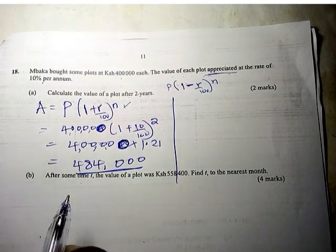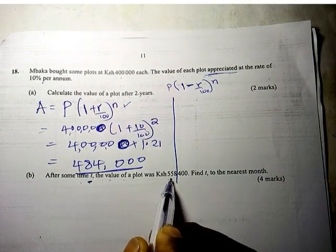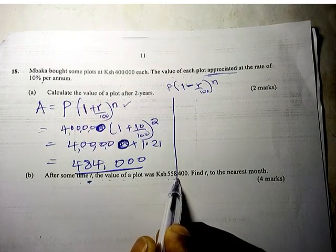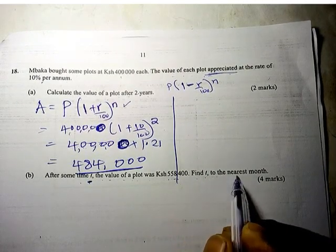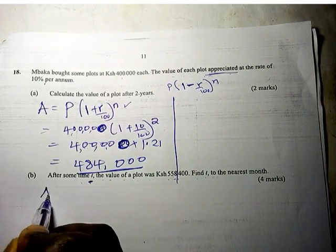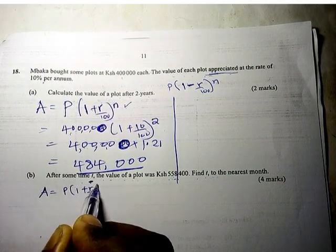After some time T, the value of the plot was 558,400. Find T to the nearest month. So we have been given the amount. Amount equals P times 1 plus R over 100 raised to power N.